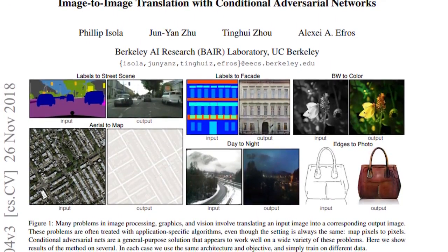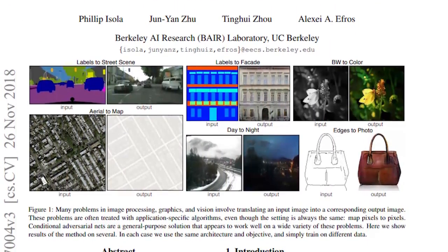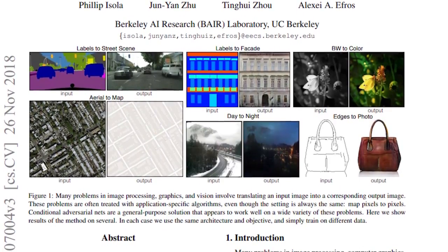Isola et al. from Berkeley Research used the U-Net as a generator in their Pix2Pix GAN used for image-to-image translation.